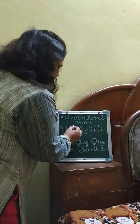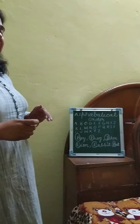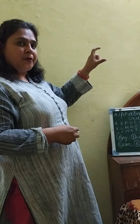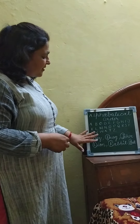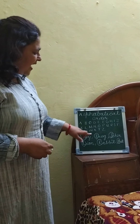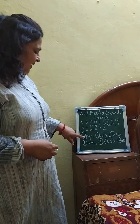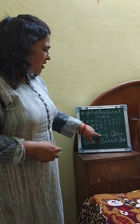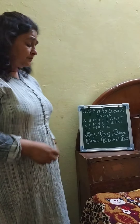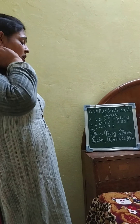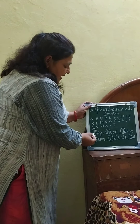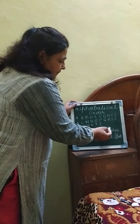How to arrange it? I will tell you. You have to write all letters in your copy at the upper portion. Then write the words — whatever words ma'am has given you. Like I have written: boy, frog, joker, lion, rabbit, and bat. Then what you have to do is circle the first letter of each word.